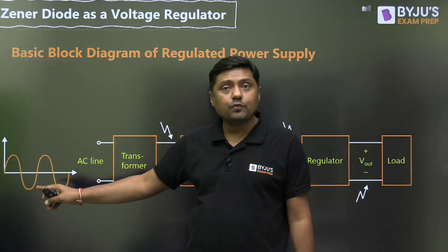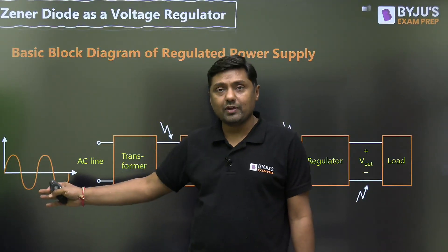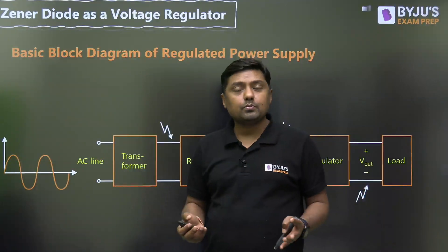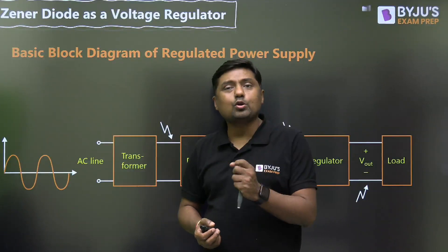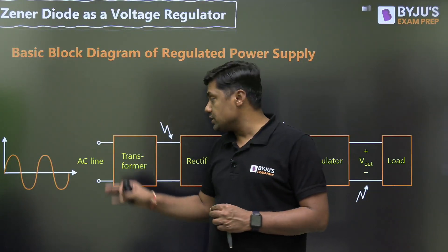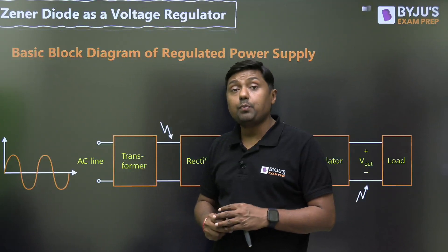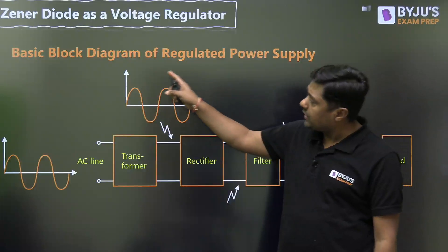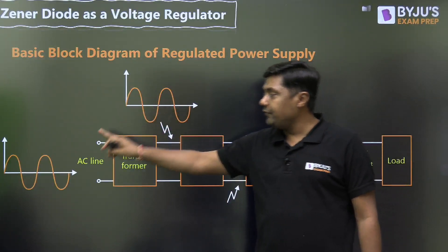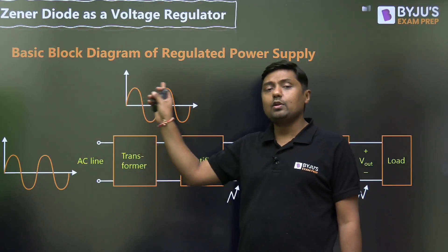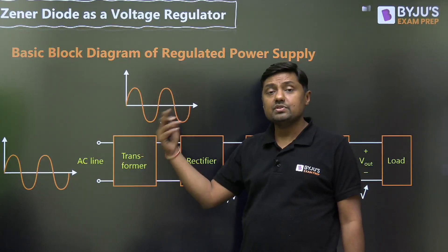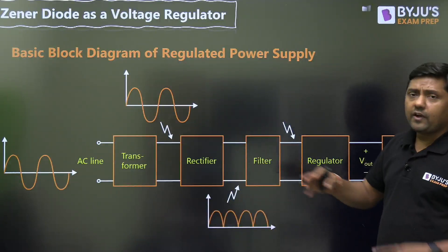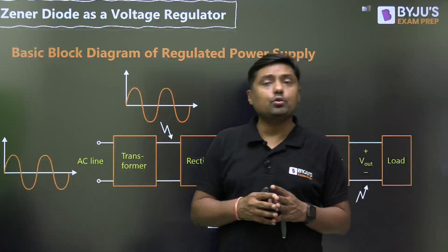The 230 volt, 50 Hz signal passes through the transformer — it may be step-down or step-up. Normally in electronics we want 10, 15, or 20 volts, so we use a step-down transformer. After step-down we again get a sinusoidal signal whose average value or DC value is zero. This signal then passes through the rectifier, which converts the bidirectional waveform into a unidirectional waveform.